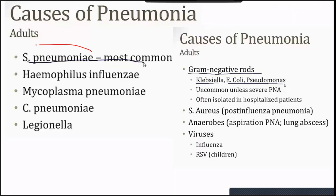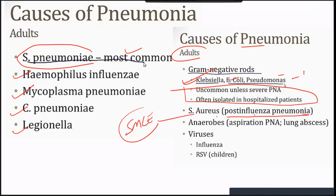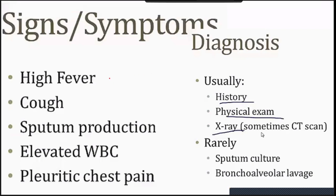Signs and symptoms of pneumonia: fever, cough, sputum production, WBC count usually more than 15,000, and pleuritic chest pain. History, physical examination, chest X-ray, and sometimes CT scan confirm the diagnosis. Community-acquired pneumonia is usually caused by Streptococcus pneumoniae, H. influenzae, and Staphylococcus aureus — MCQ. Hospital-acquired (nosocomial) pneumonia is caused by very resistant gram-negative organisms like Klebsiella and E. coli — MCQ. Nosocomial includes ventilator-associated pneumonia, which was prominent during COVID-19.